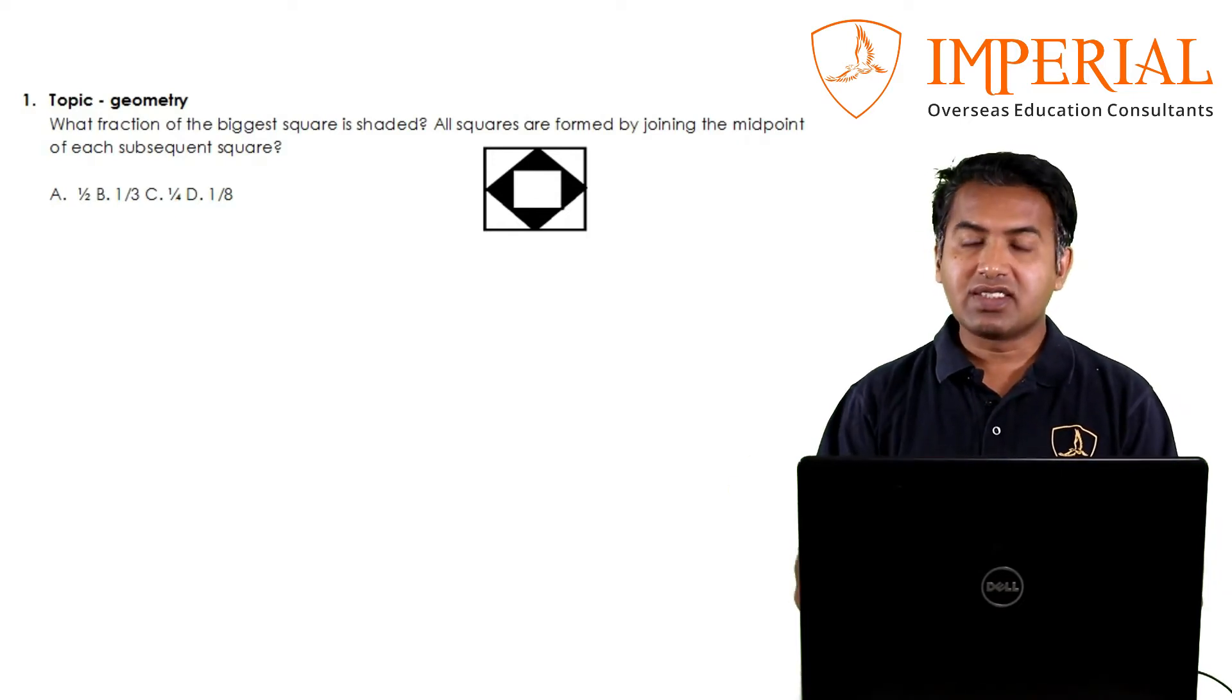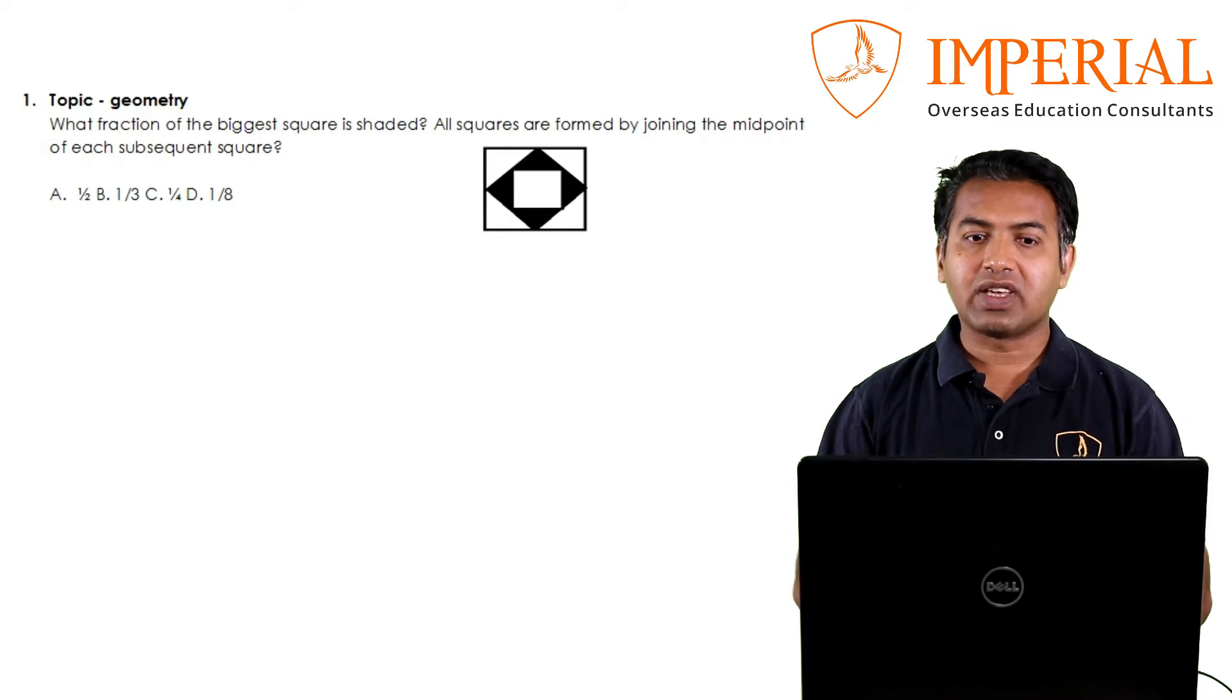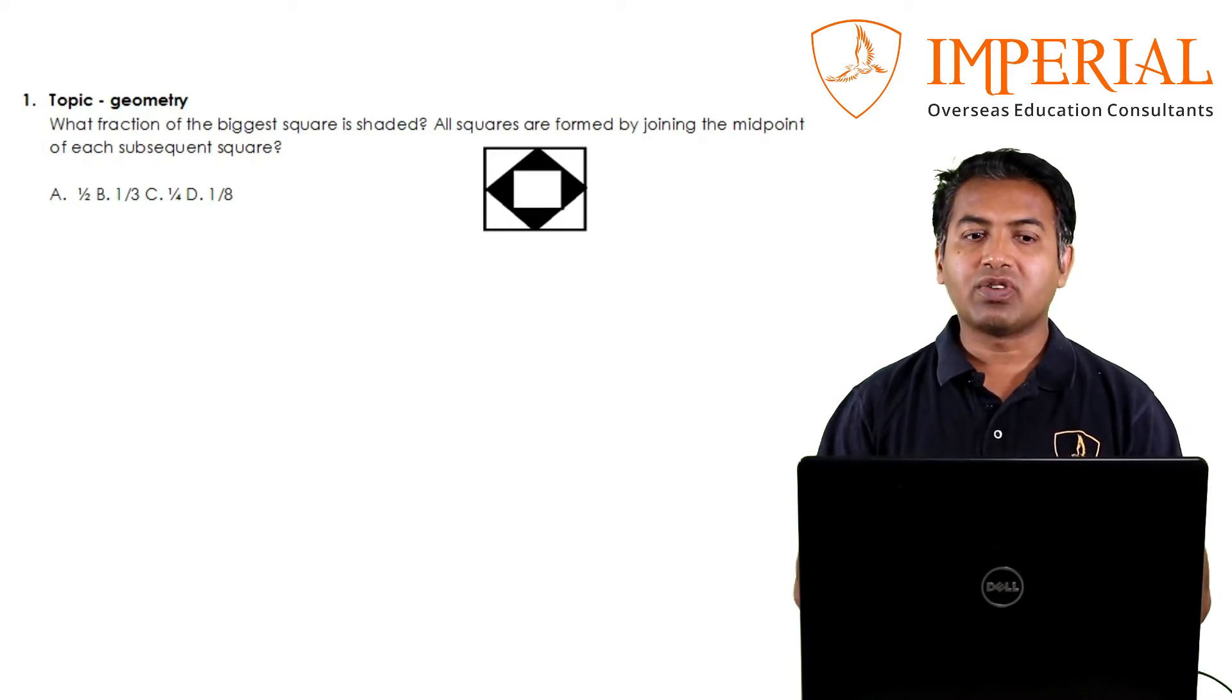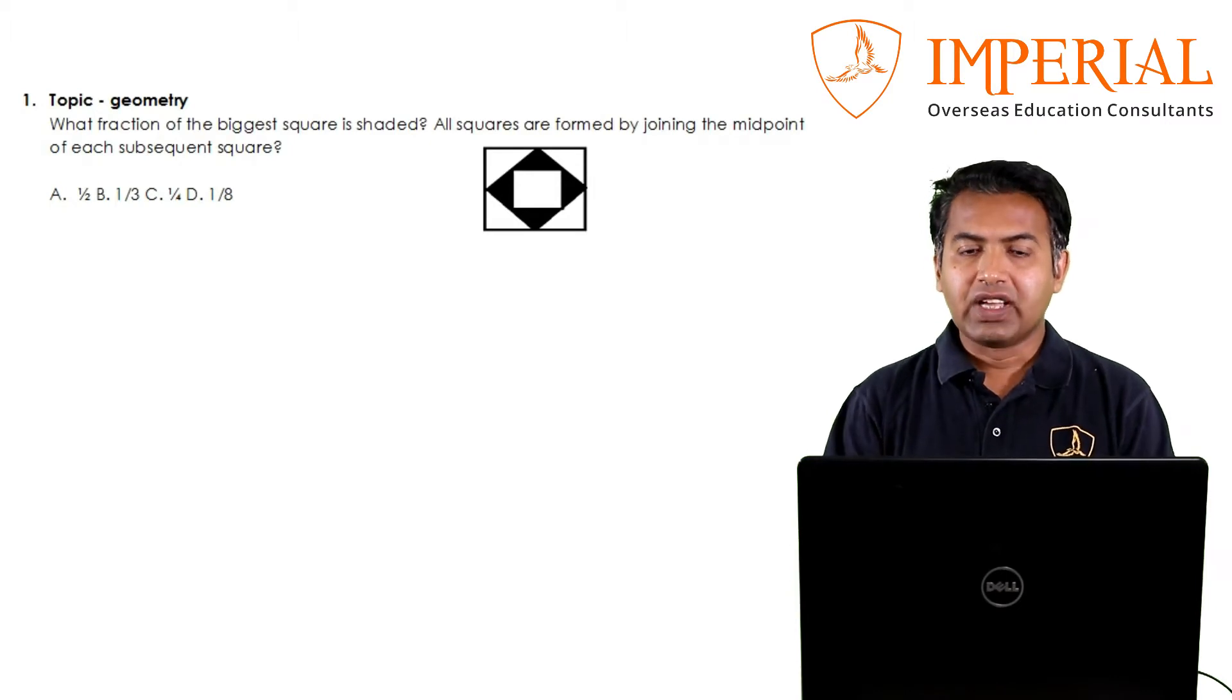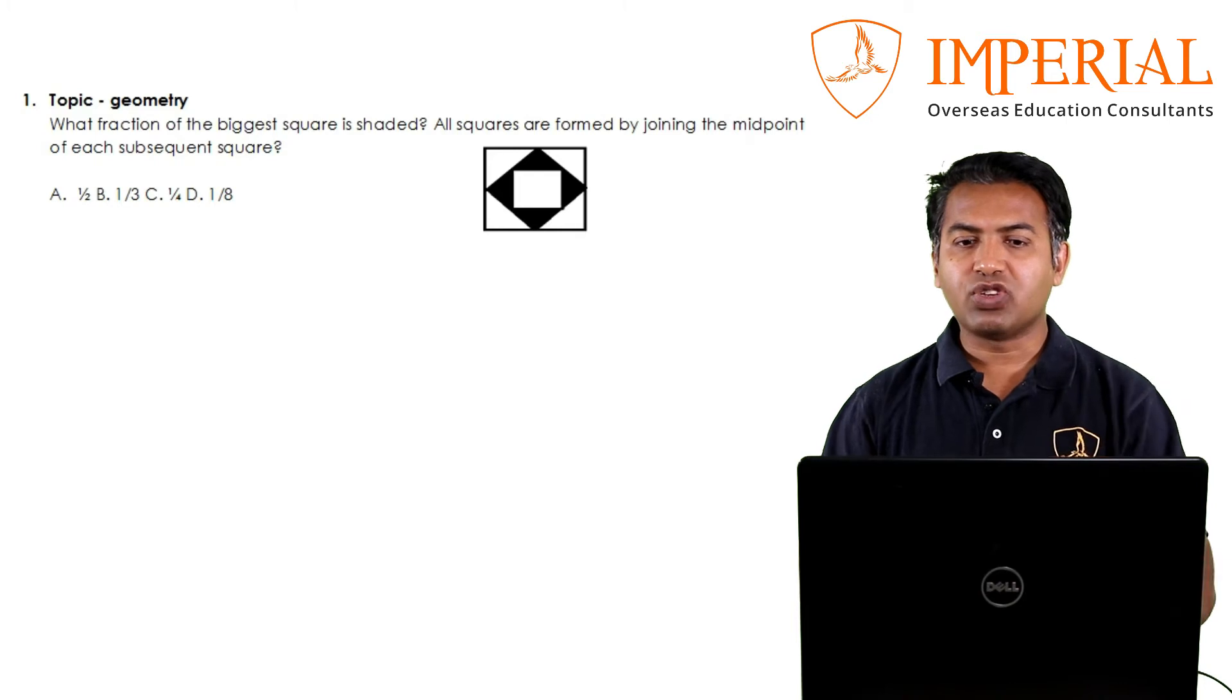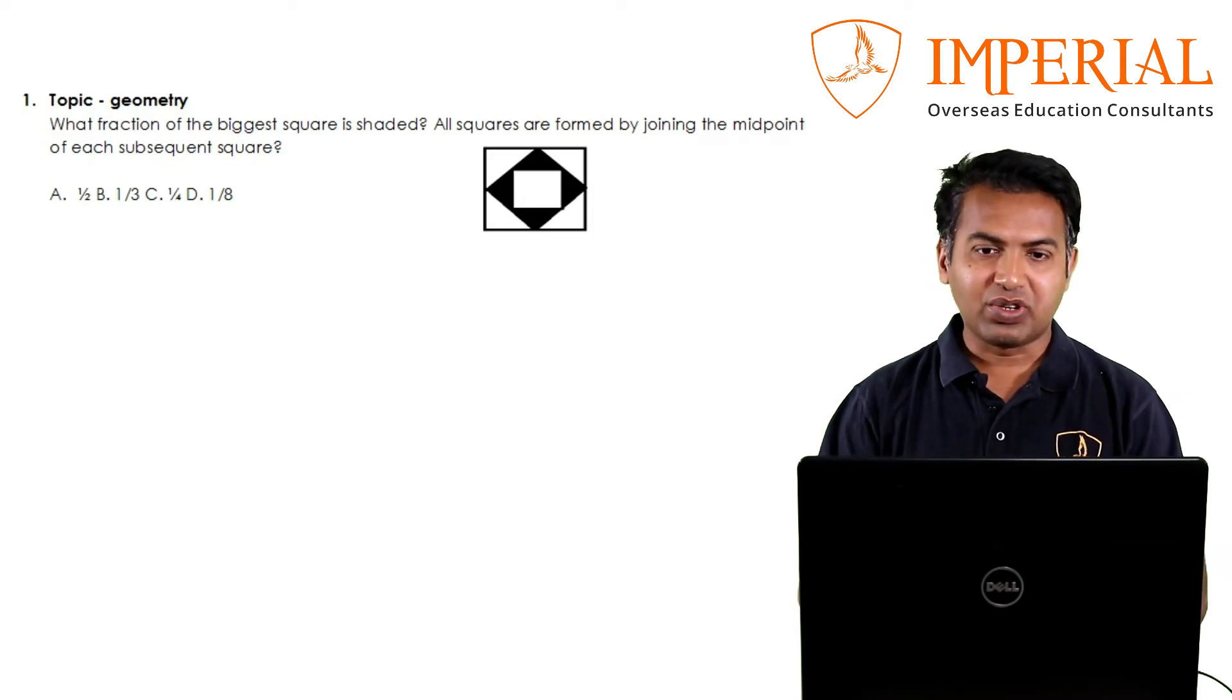Here's the first question. I've taken a question from geometry. What fraction of the biggest square is shaded? All squares are formed by joining the midpoint of each subsequent square. It can also come as a probability question: what is the probability a dart thrown on the biggest square falls in the shaded region? Go ahead and give it a shot.